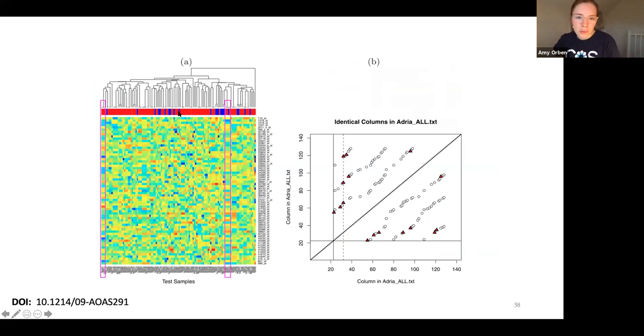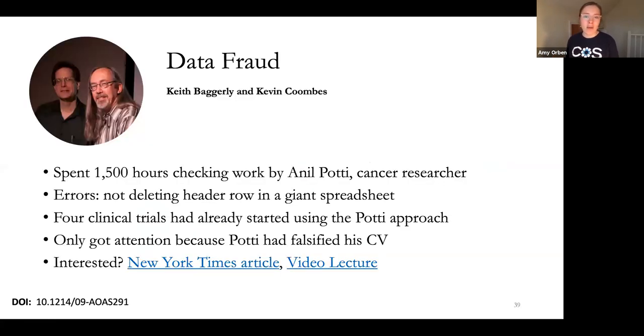And they also found true errors and found fraud in the rest of the papers. For example, these are big correlation matrices. And here you see that there must be some sort of duplication in these rows there. And so they did these 1,500 hours of work, finding that this work was actually really problematic. They talked about it. Nobody really wanted to know. Four clinical trials were starting to use the approach. And actually, Potti was only found out because somebody else found out he'd falsified his CV. And then people started getting interested in the claims that Keith and Kevin had made. And again, there's a really great video lecture of them there.